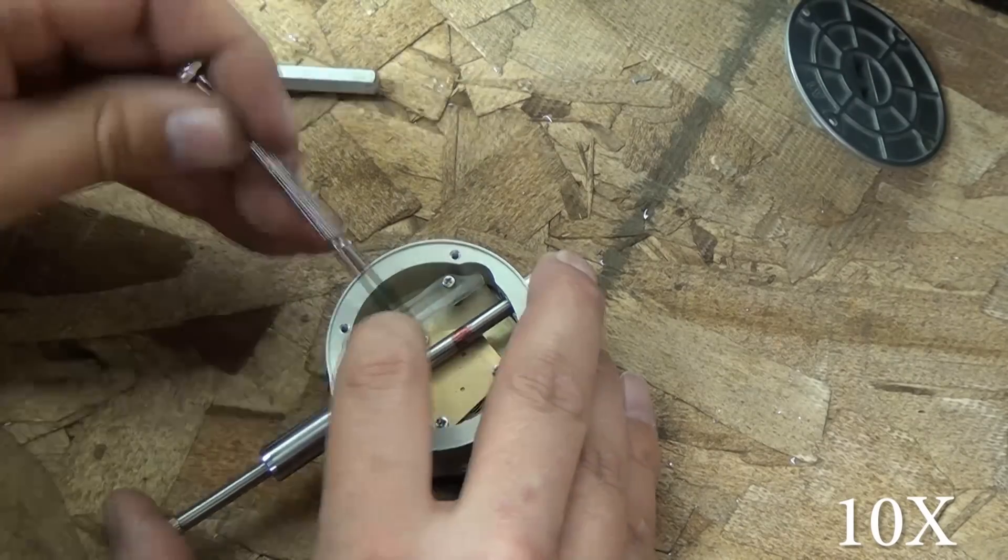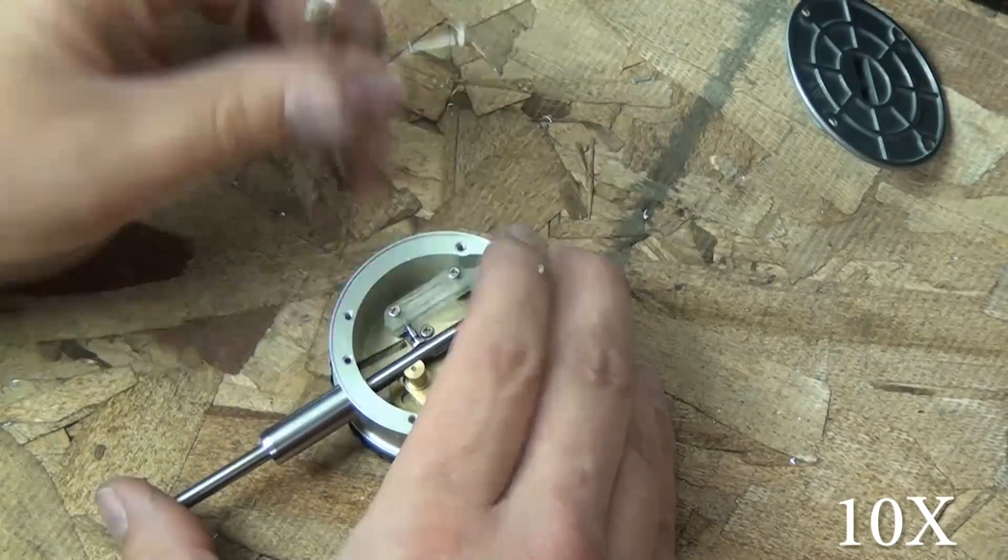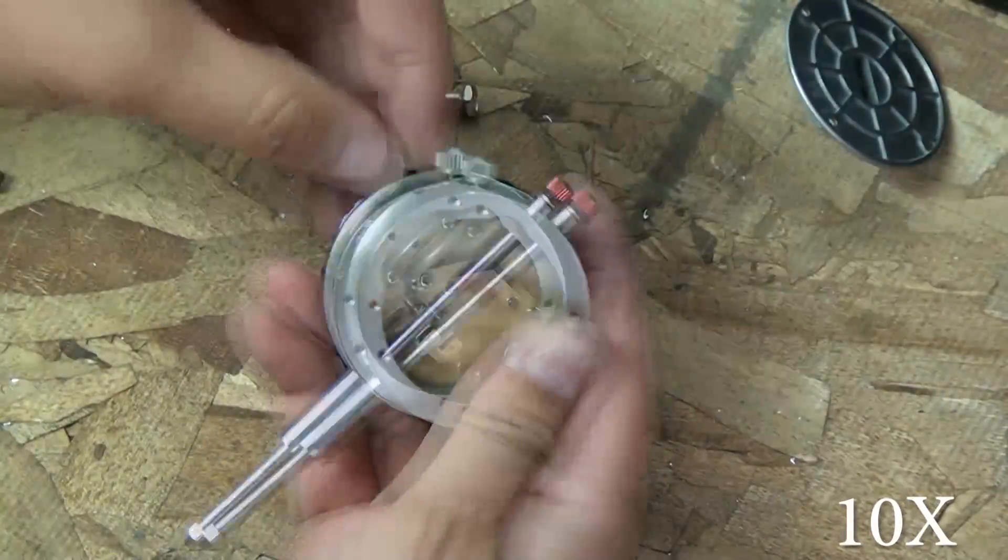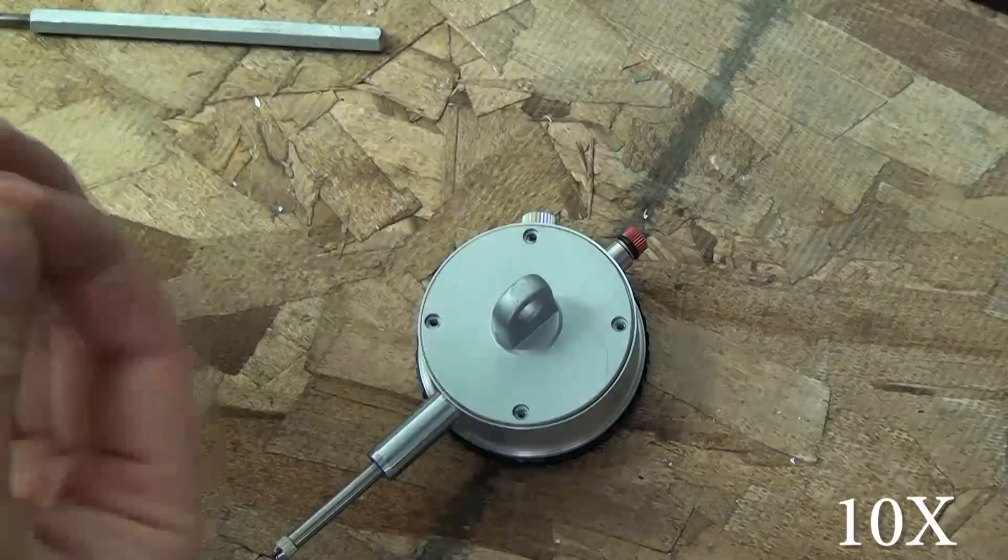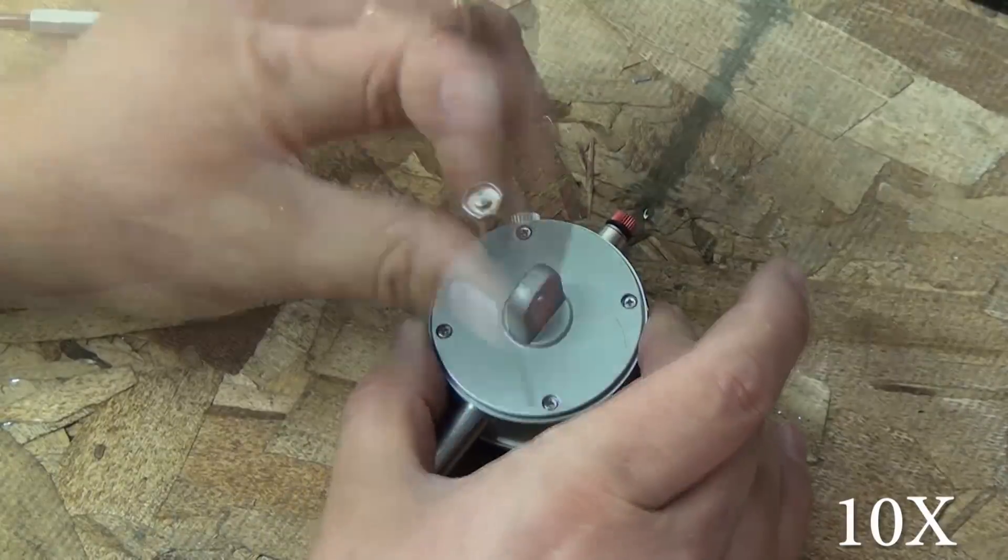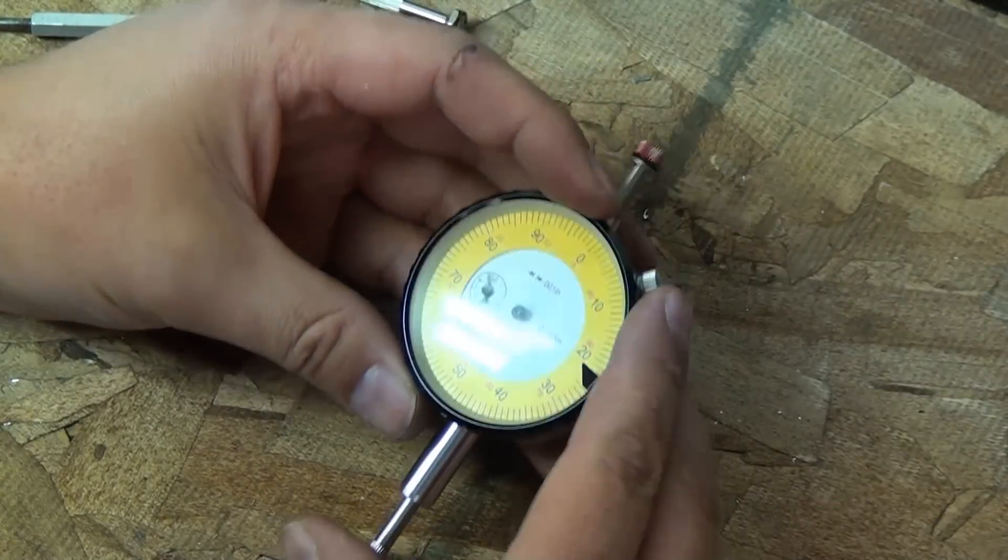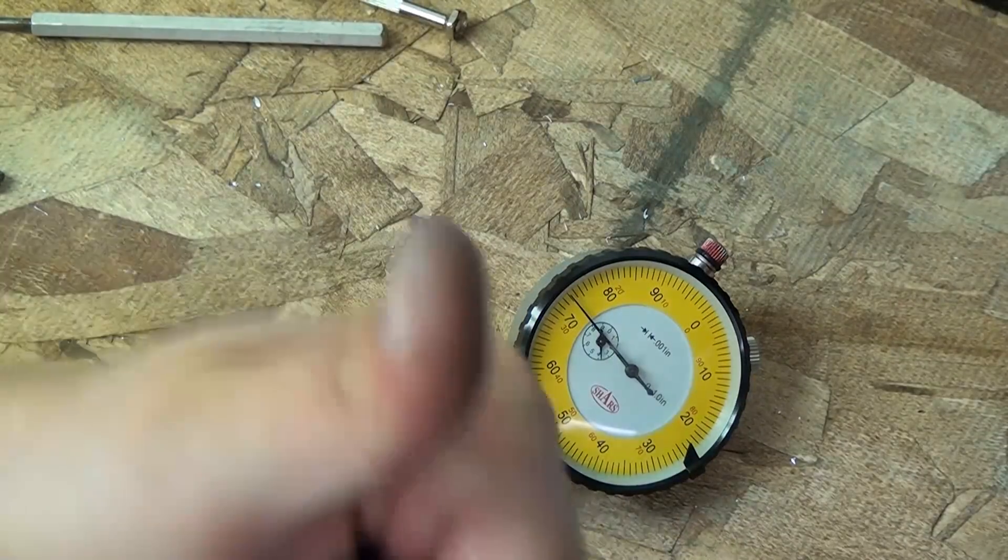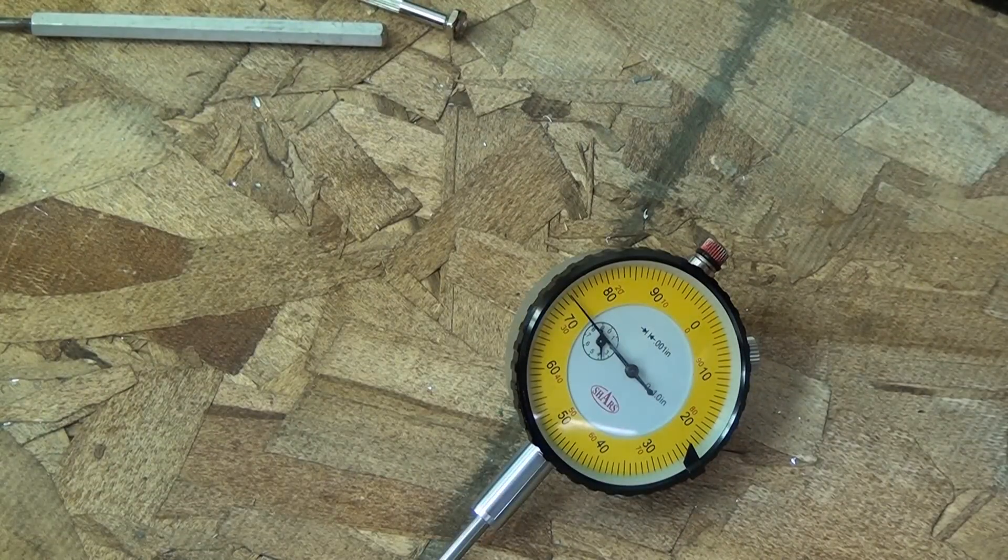And that was it. I don't know if this was really educational for anybody but hopefully it satisfied some curiosity if you've always wanted to see the inside of an indicator. There's a link in the description where you can buy this from Shars. I recommend it because I've had good luck with it. Feel free to leave your comments and questions below, don't forget to subscribe, and we'll see you in the next video.